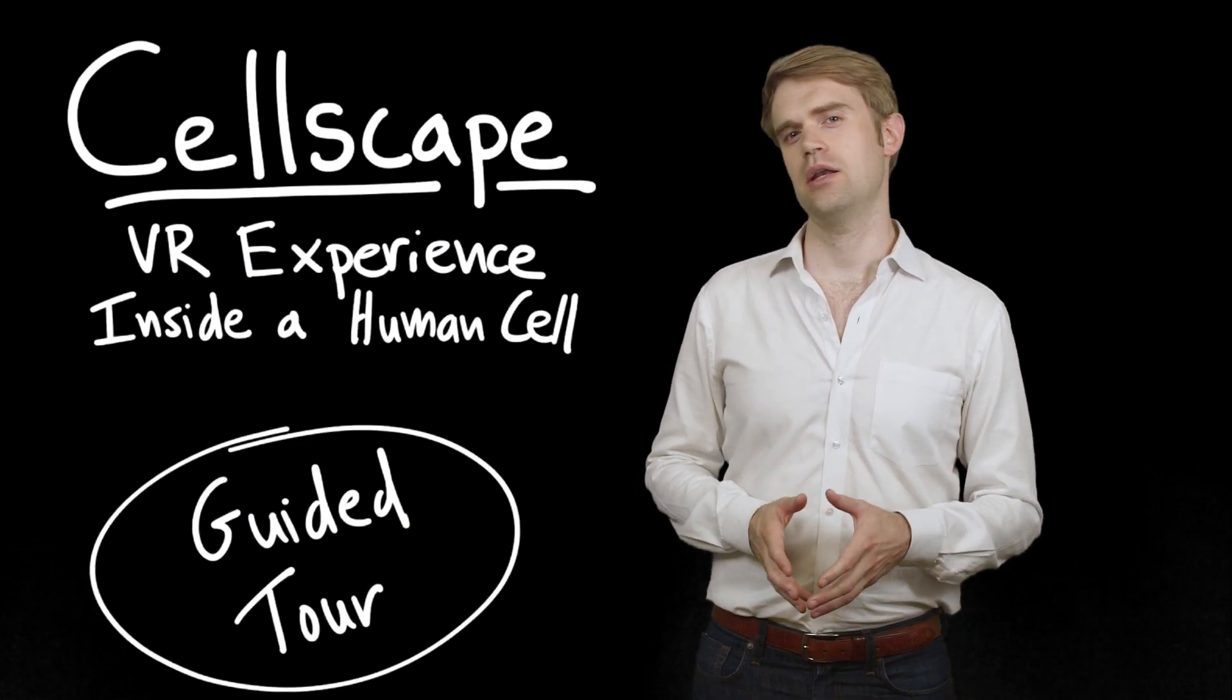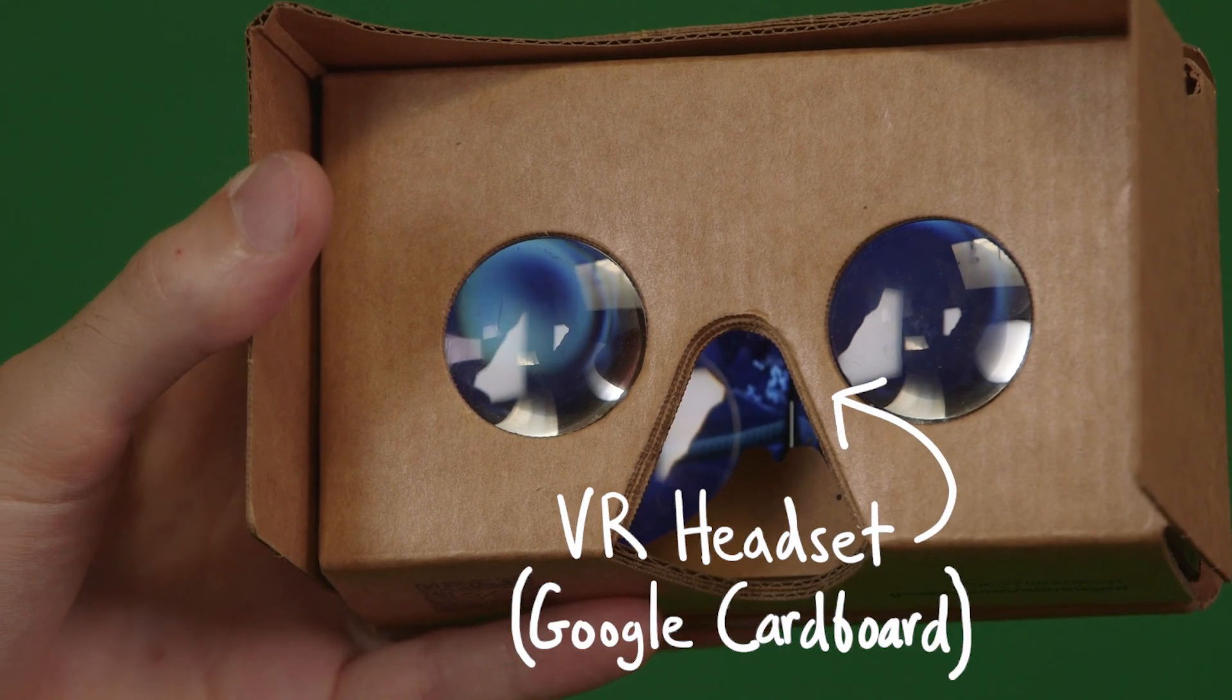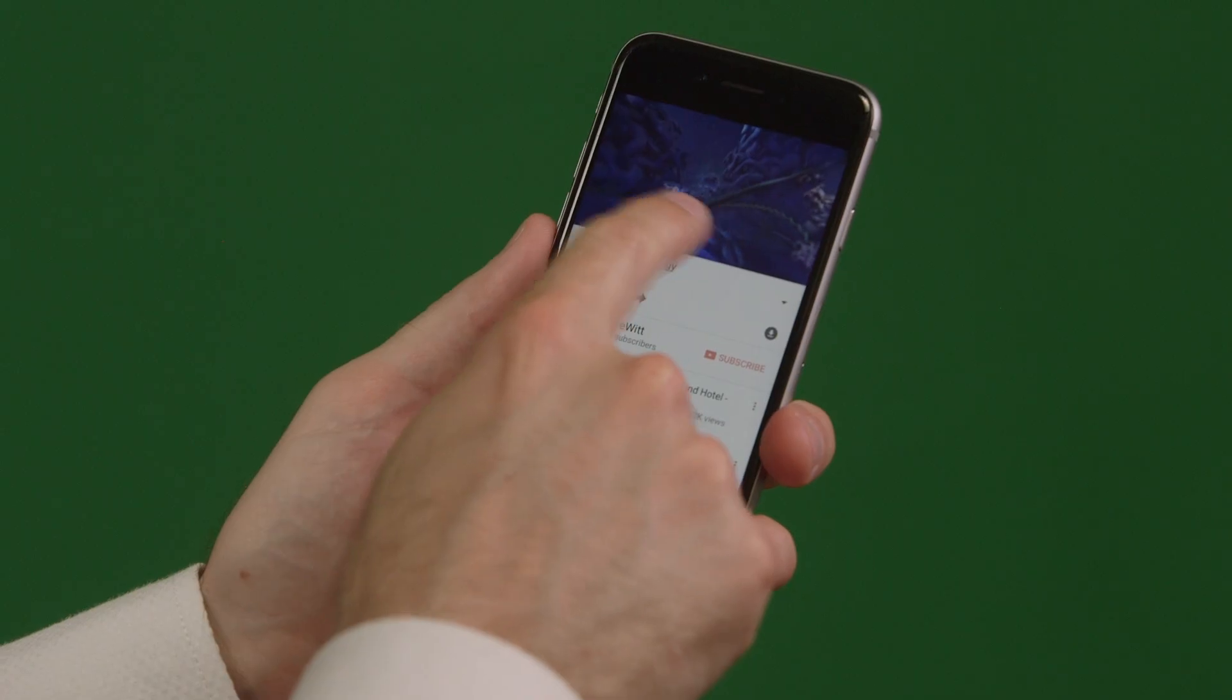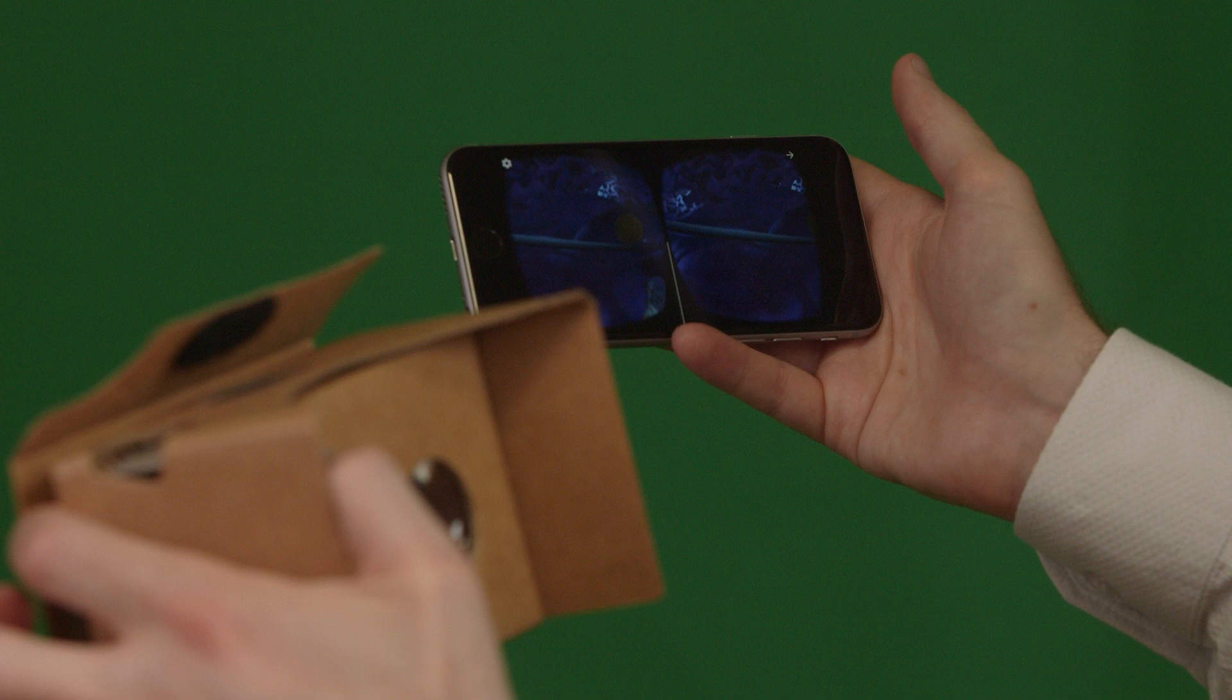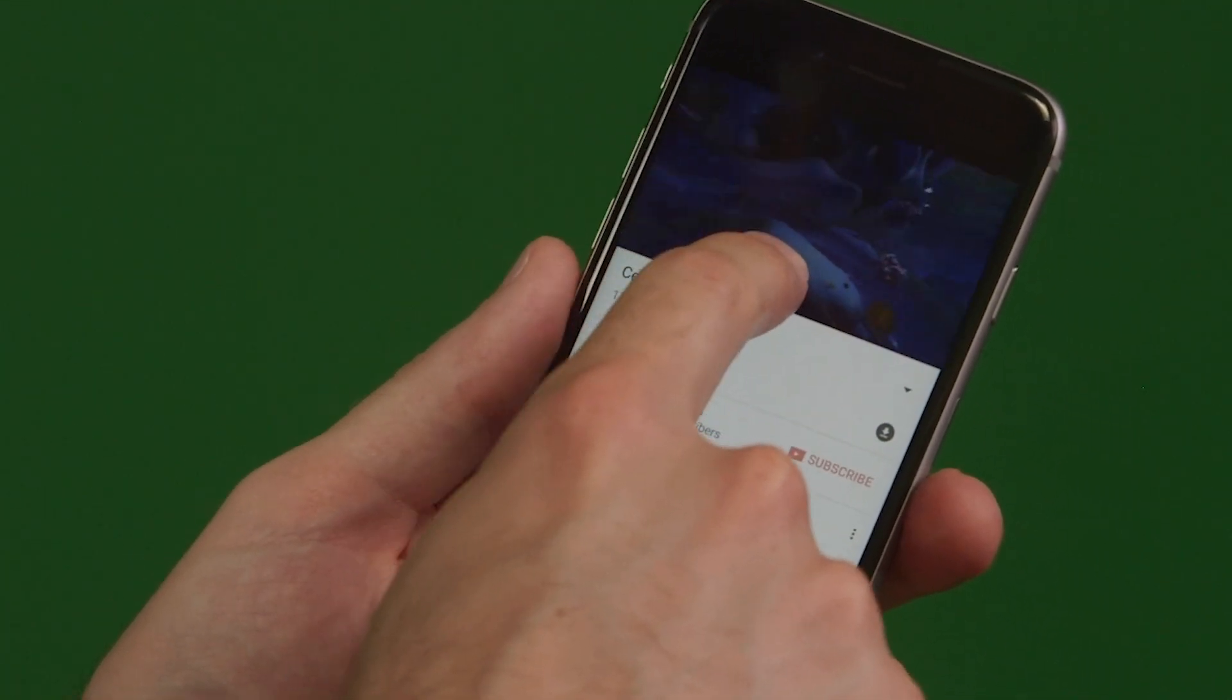If you haven't seen it yet, Cellscape is best experienced with a VR headset like Google Cardboard. Pull up the video on YouTube on your phone, click the viewer button, and then place the phone in a VR headset. If you don't have a VR headset, you can still navigate around the environment if you watch in YouTube on your phone or in Google Chrome.